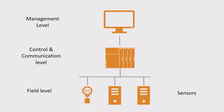Industrial sensors are within the field level of automation. Then you have the PLC or the controller, and finally you would have the computer or the application at the management level. This is how you would typically see the arrangement within the industrial automation field.